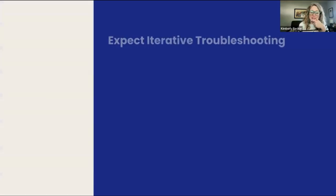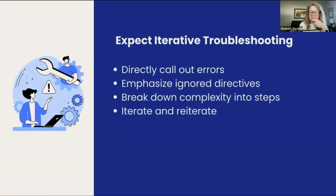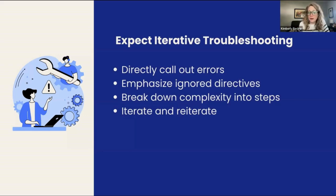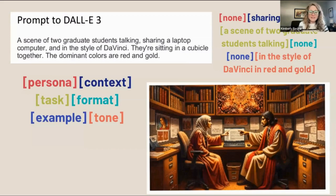I said in the webinar you need to mitigate this with iterative prompting, but she had already been iterating. You've got to call out errors — when the model doesn't listen, you have to correct it. Say, 'You ignored my directive to do X.' Break it down into steps. AI has a reputation for being speedy and efficient, but if we want to be careful, it's not going to be fast.